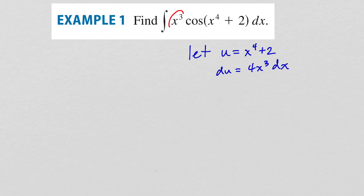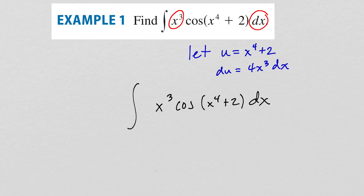For this to work, I must have the du. Replacing the cosine argument is easy — we just replace x to the fourth plus two with u. But the question is what happens to x cubed times dx. du is four times x cubed times dx, so I'll multiply the integrand by four and multiply the outside by one-fourth, since one-fourth times four cancels out. Four x cubed times dx is precisely du.